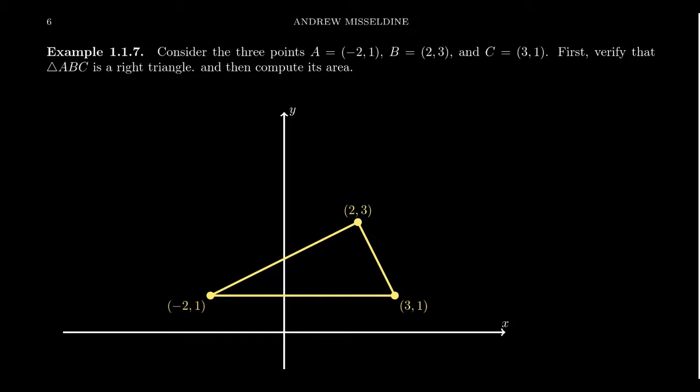These points are clearly non-collinear, and therefore they form a triangle. What we want to first do is verify that this triangle ABC is in fact a right triangle. How do we show that it has a right angle? And then once we determine it's a right triangle, what we want to do is actually compute the area of the triangle. So how can we show that a triangle is right?